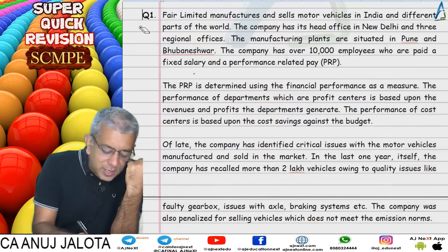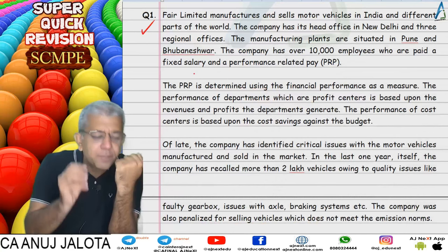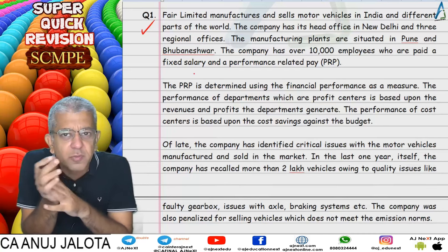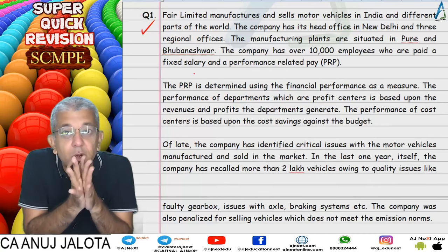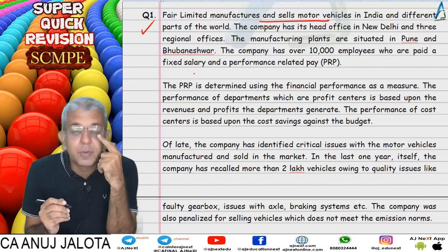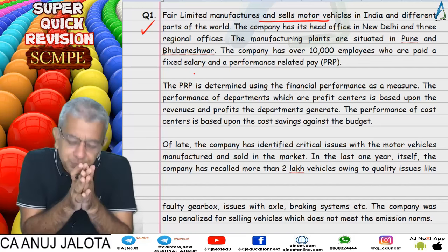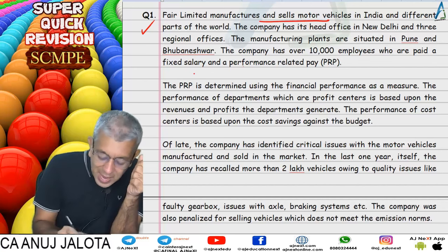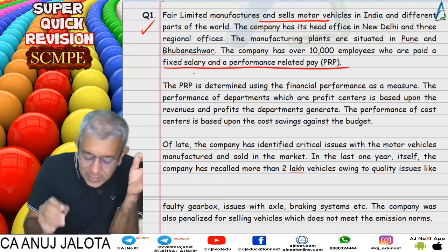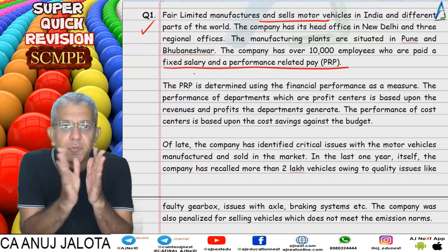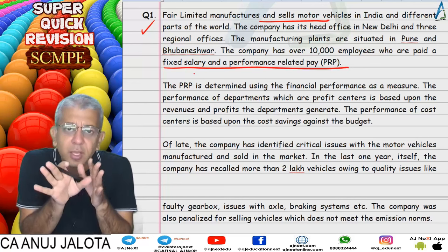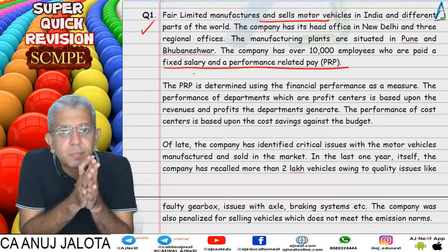Our first question was a general question — I see lesser chance of such questions being asked, so I've given it a one-star rating. This question was about a company selling motor cars in India and different parts of the world. This company pays its employees a fixed salary and performance-related pay, meaning however an employee performs financially, they receive that much pay.